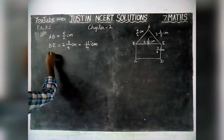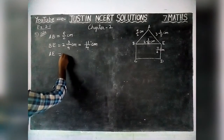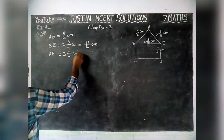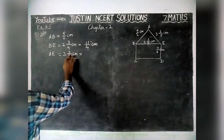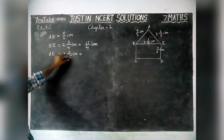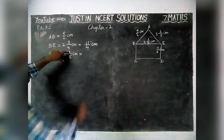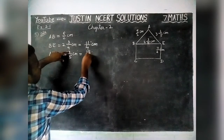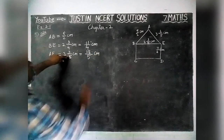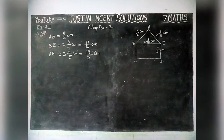And next, AE is equal to 3 and 3/5 centimetre. We convert this into an improper fraction by multiplying the whole number by the denominator: 3 fives are 15, and 15 plus 3 is equal to 18. So AE equals 18/5 centimetre. Now we have all three sides and we are going to find the perimeter of the triangle.